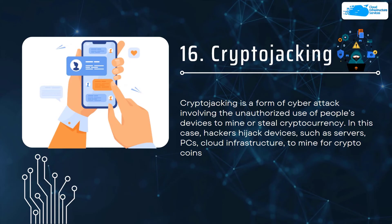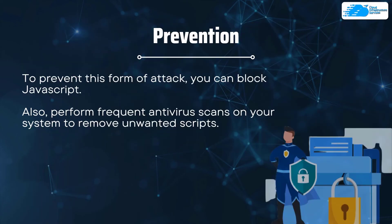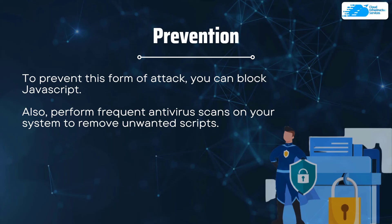Number sixteen is cryptojacking, a form of cyber attack involving the unauthorized use of people's devices to mine or steal cryptocurrency. The hacker hijacks devices such as servers, PCs, mobile phones, and cloud infrastructure to mine crypto coins. To prevent cryptojacking, block JavaScript since most of these applications use it for execution, and perform frequent antivirus scans to remove unwanted scripts.